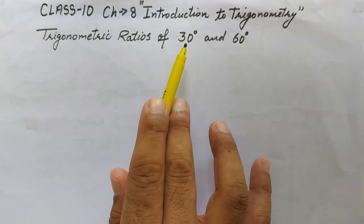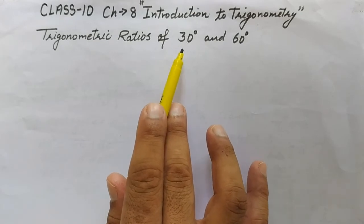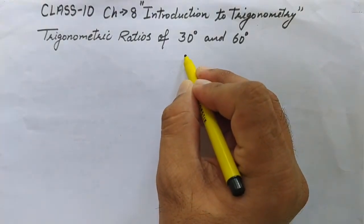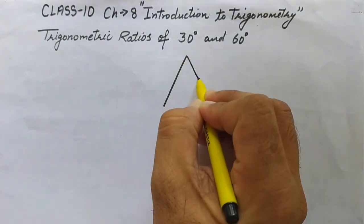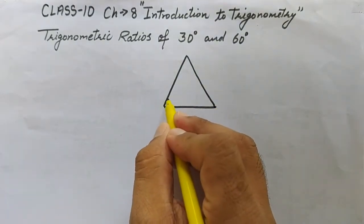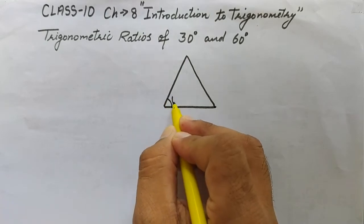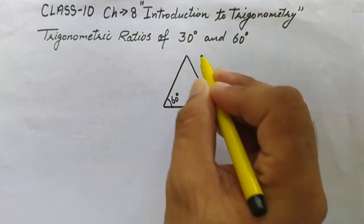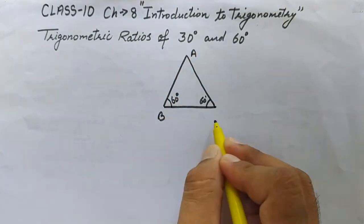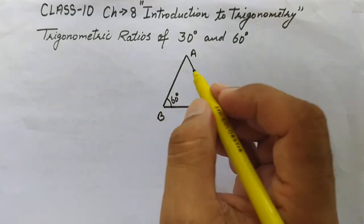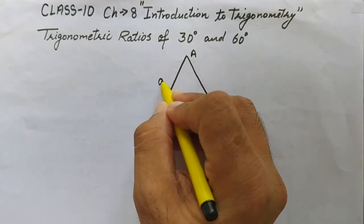Let's look at the geometrical proof of all trigonometric ratios at 30 degrees and 60 degrees. We draw an equilateral triangle — suppose this is triangle ABC. In an equilateral triangle, all angles are 60 degrees and all sides are equal. Let each side be 'a' units.